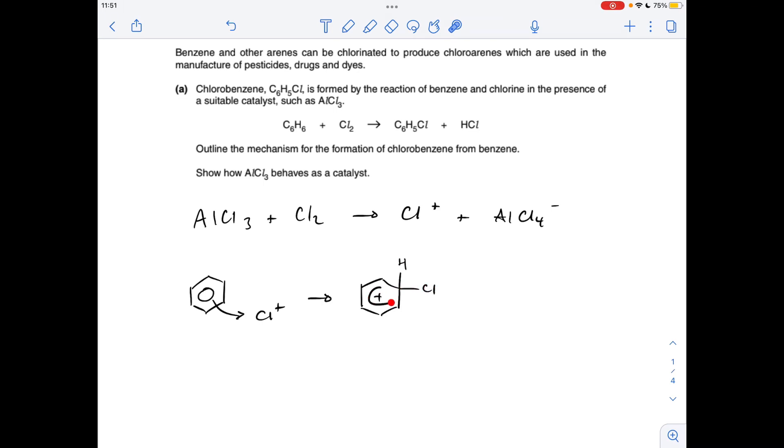Partial electron cloud open where the substitution's taking place with a positive sign in. We take a pair of electrons from the CH bond back into the ring, and that gives us the product, chlorobenzene, and an H+ ion.